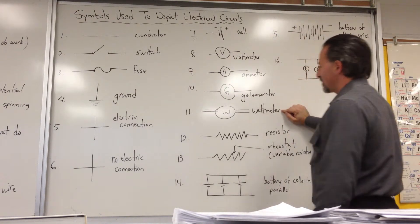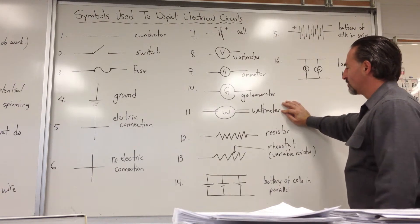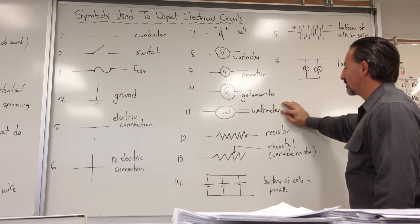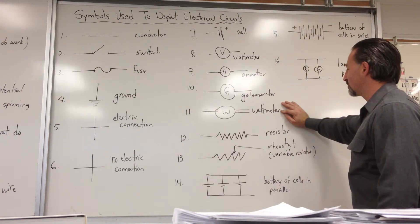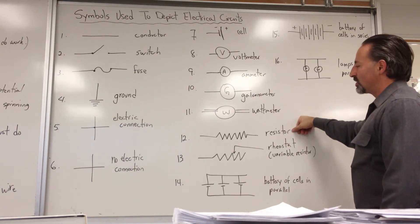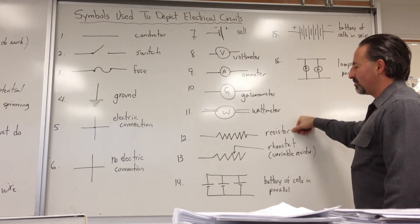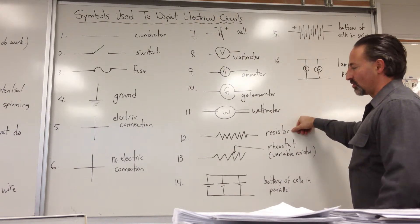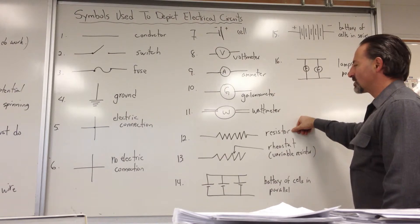A wattmeter measures how much power is flowing through the wire in terms of joules per second. A resistor measures how much the flow of electricity is being impeded through the wire or through whatever instrument is being used, so there's a loss.